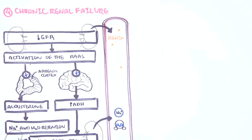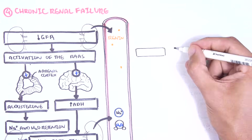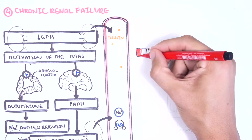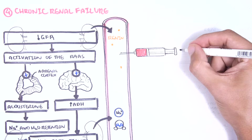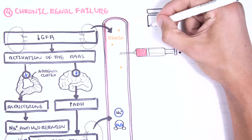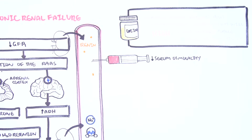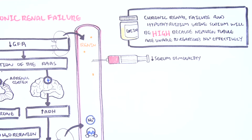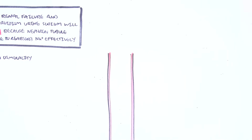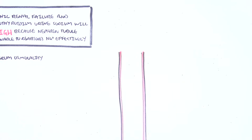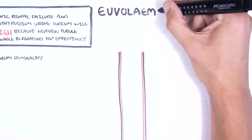In chronic renal failure and hypothyroidism, serum osmolality is reduced. However, urine sodium levels will be high in both conditions, because the nephrons are unable to retain sodium. Those are the examples of hypervolemic hyponatremia.